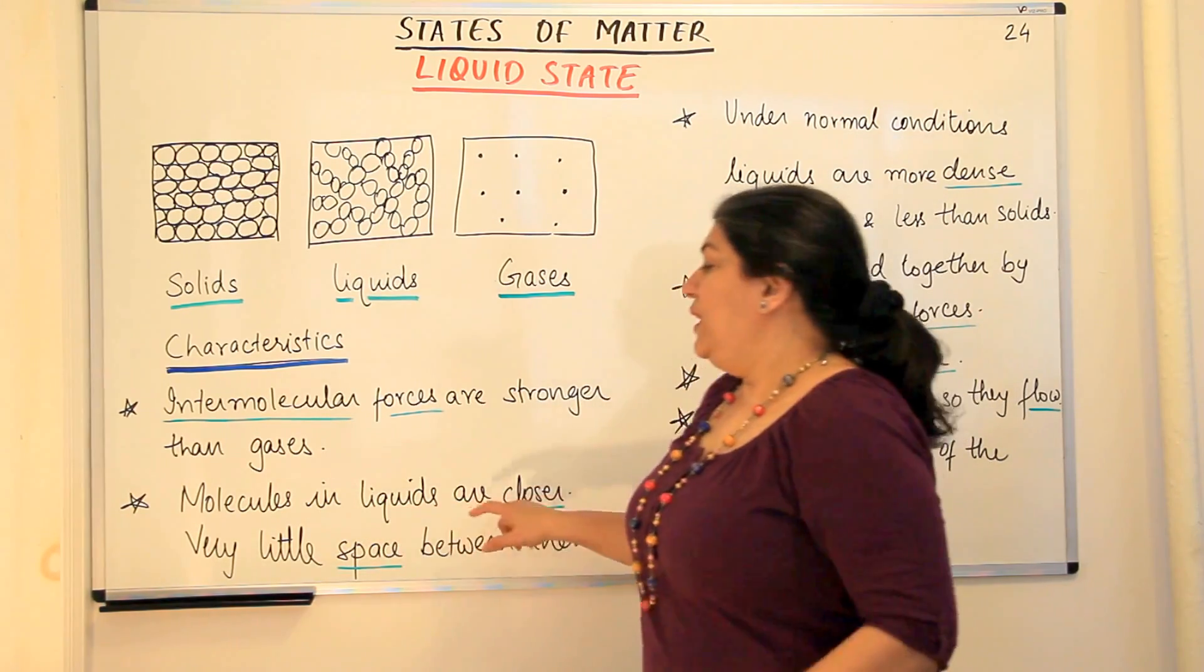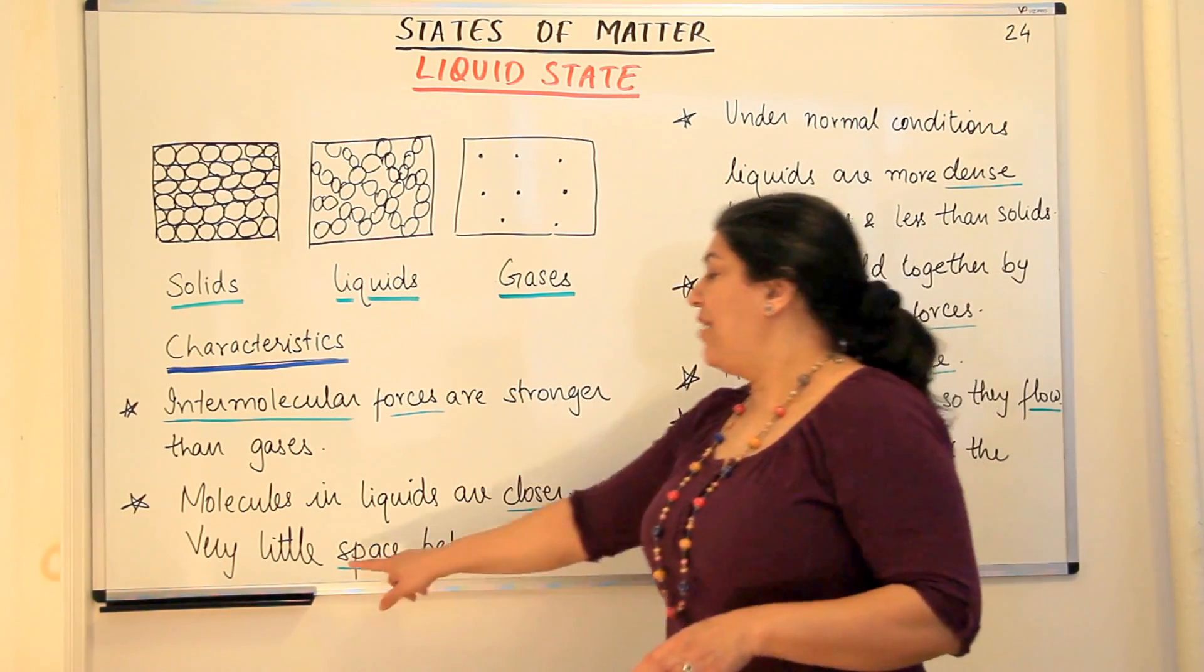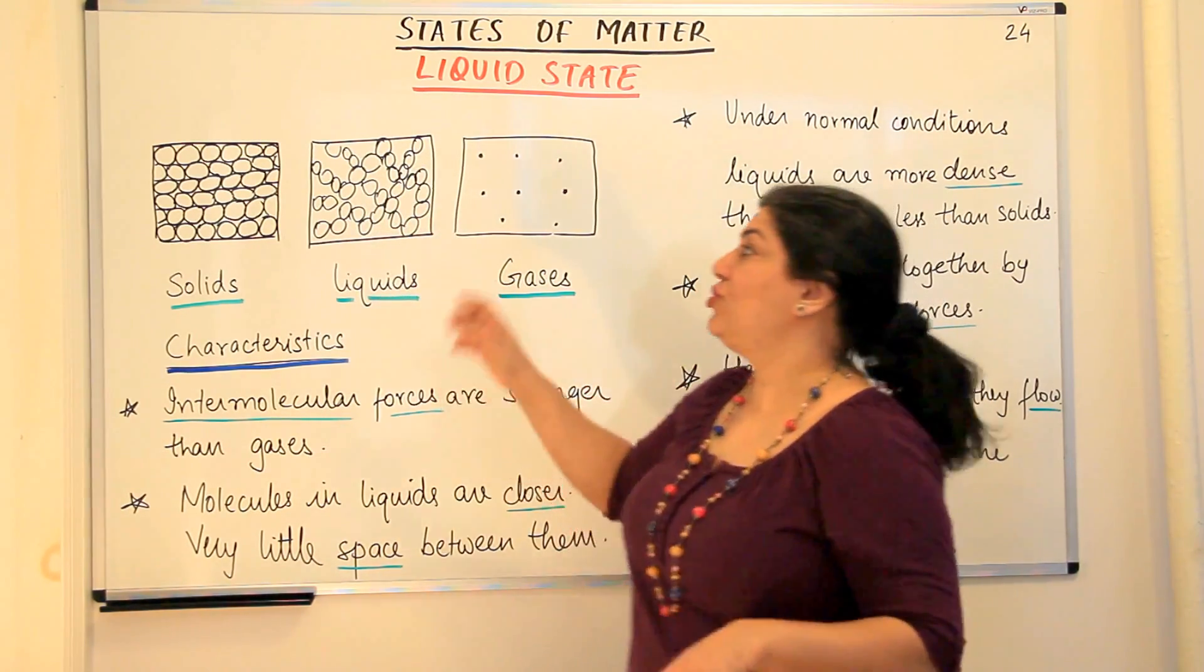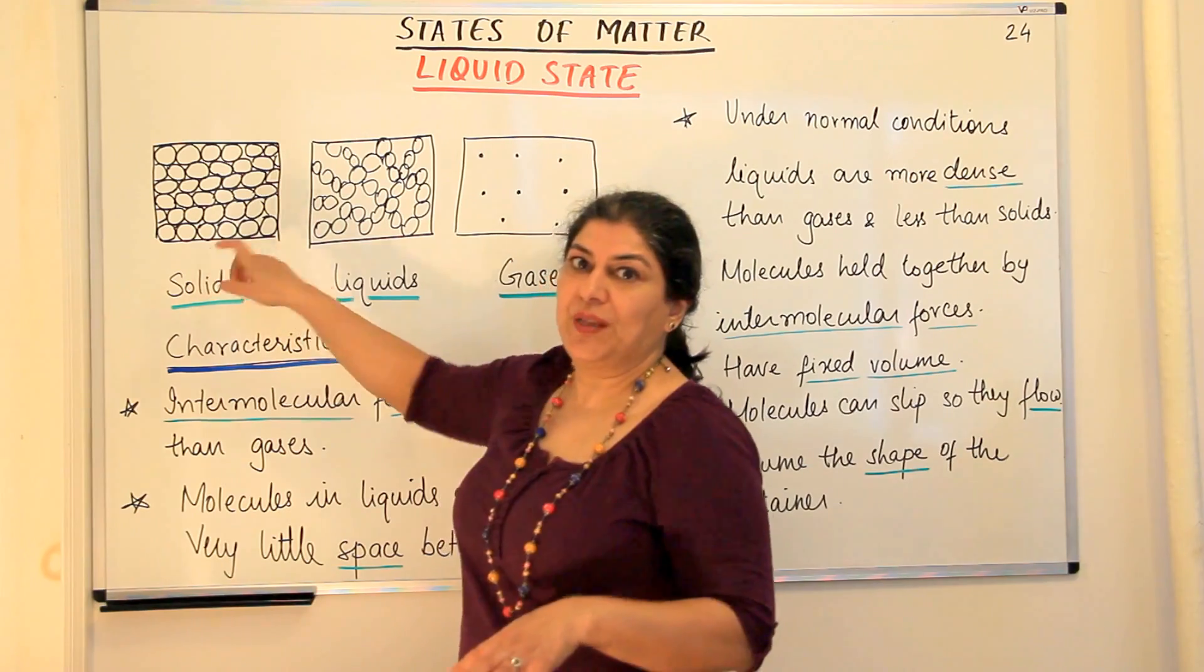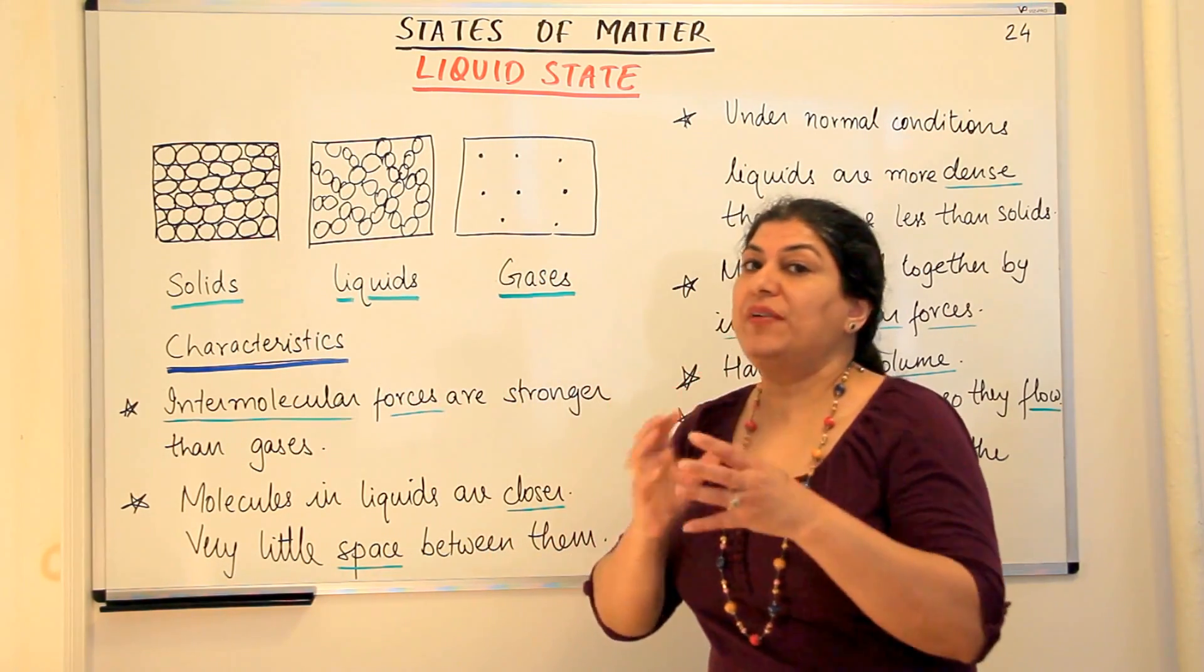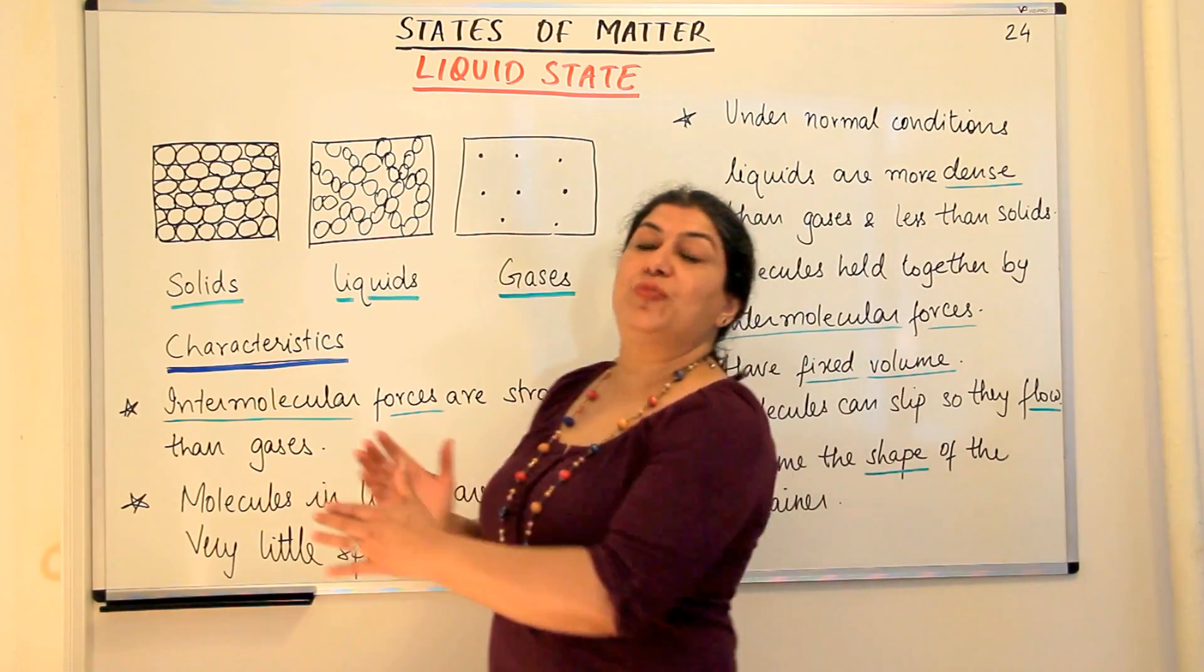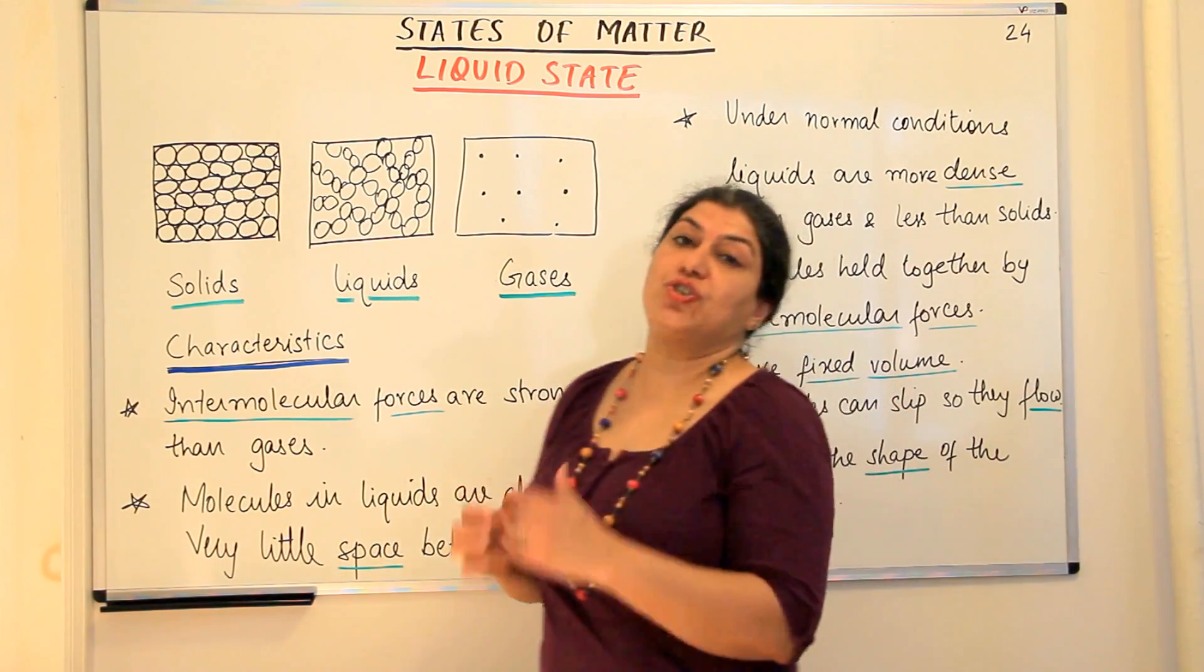The molecules in a liquid are closer, they have very little space between them yet they are not as close as solids. So whatever little space they do have between them is enough for the molecules to be able to move from one position to the other.